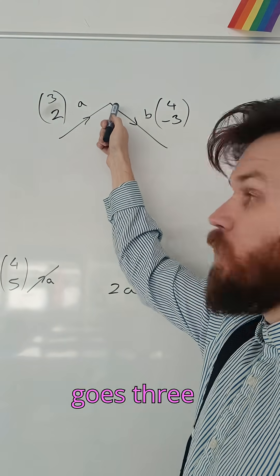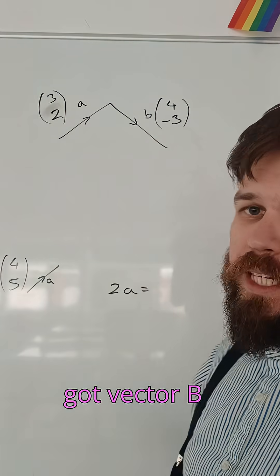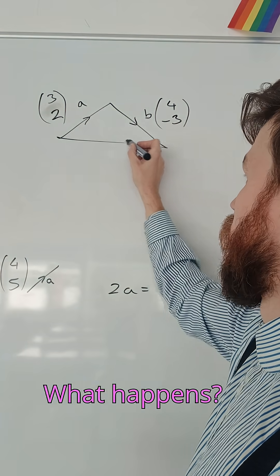So here I've got vector A which goes three along and two up. Here I've got vector B which goes four along and three down. What happens? What's the resultant vector? What would C be?